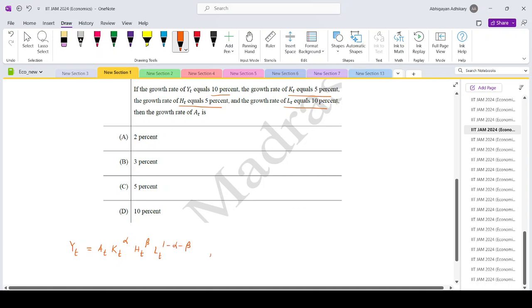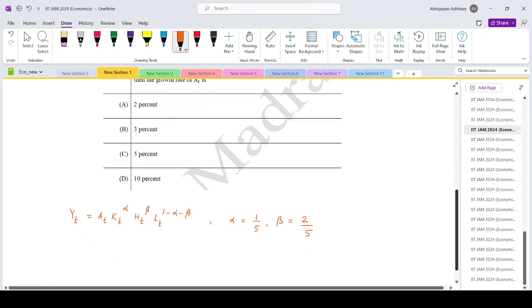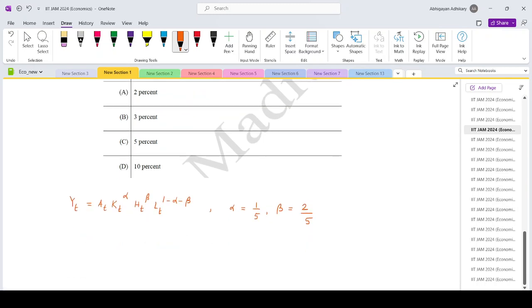Where alpha is 1 by 5, beta is 2 by 5. Growth rate of output is y dot by y, where y dot is derivative of y with respect to t, that is given as 10%, so that is 0.1.